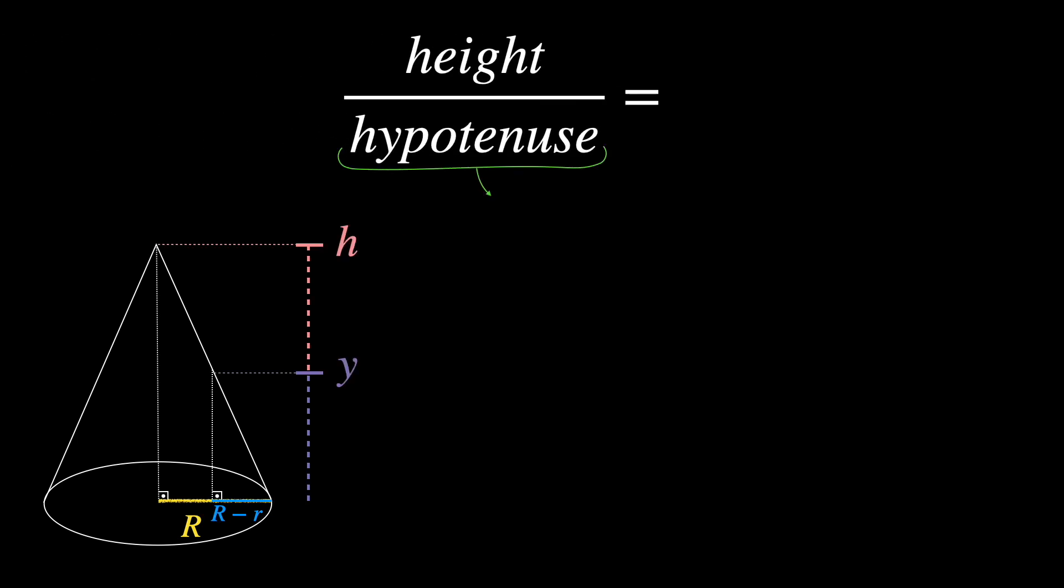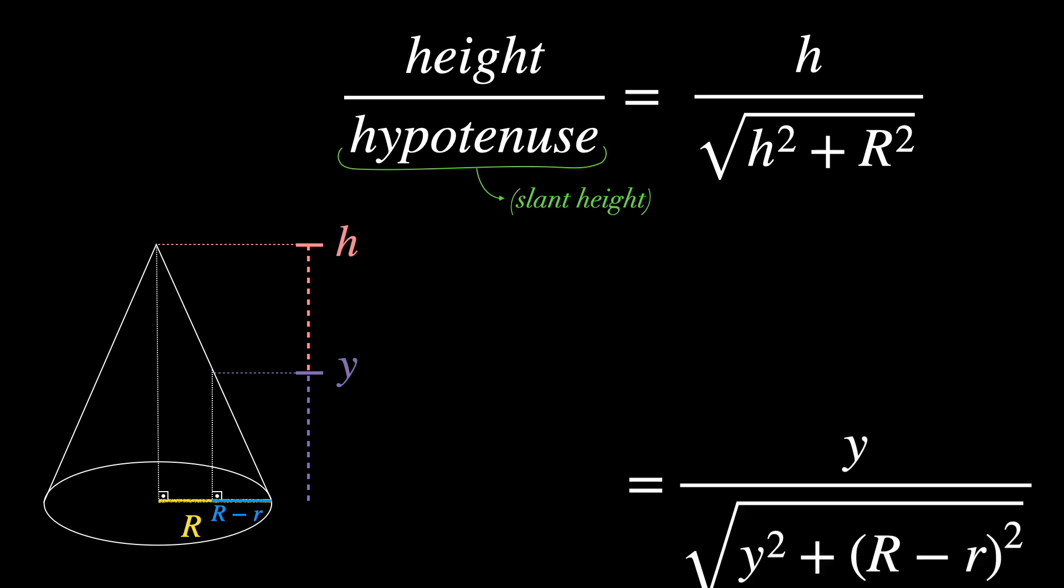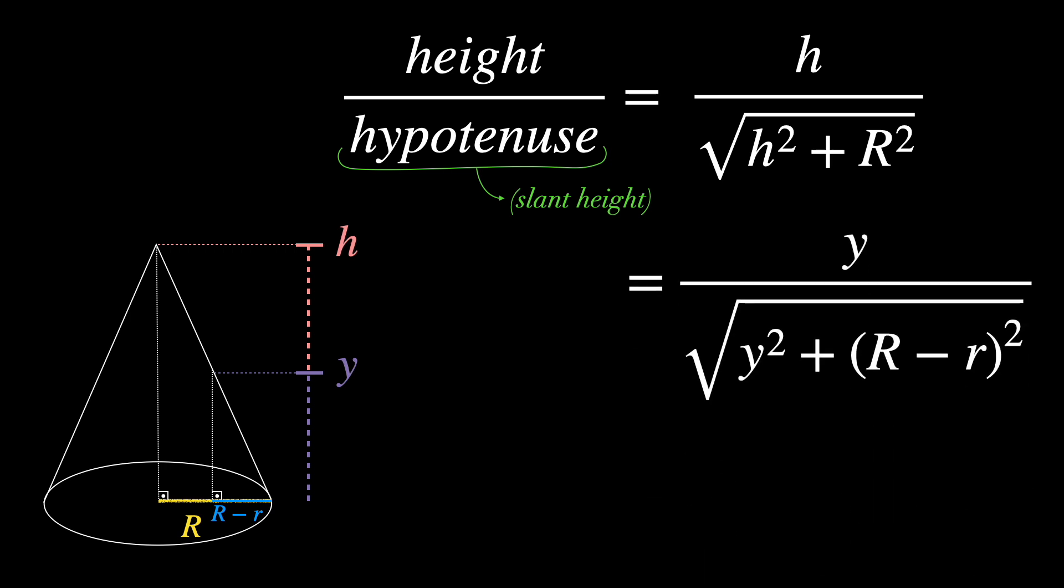Now, let's turn to the cone. We want to find a way of expressing different radii of cross-sections of the cone as a function of the height y. Again, we notice two similar triangles, but this time inside of the cone. And we create this ratio, height over hypotenuse. The hypotenuse is also called the slant height. Working on the math, we get a relation between little r and the height y.